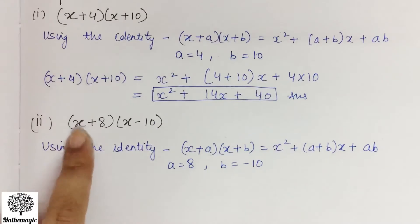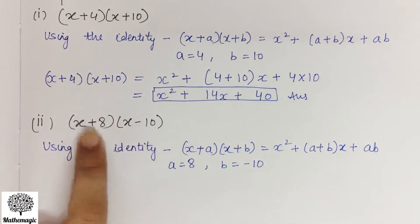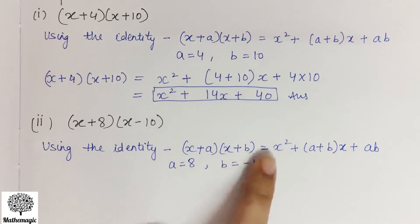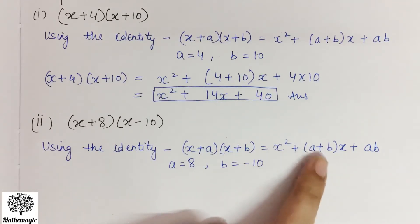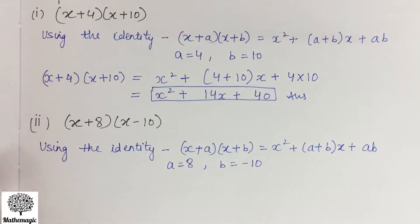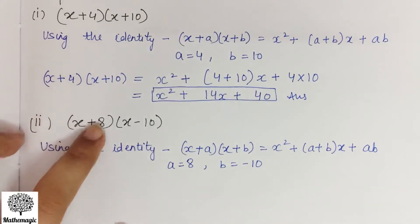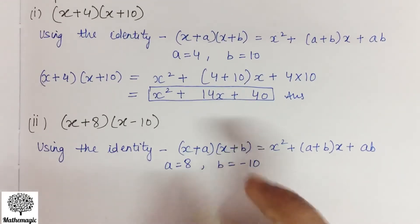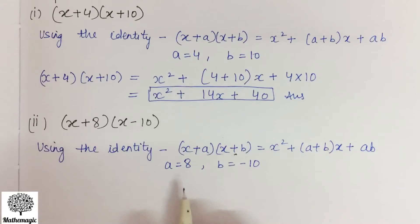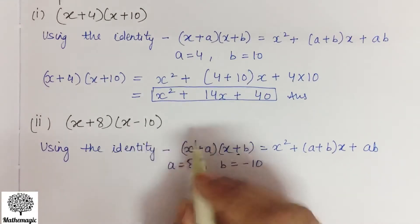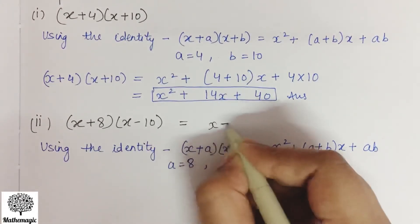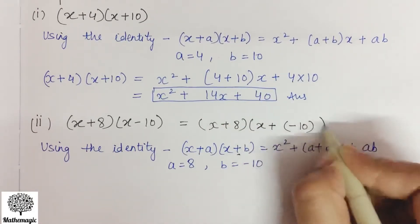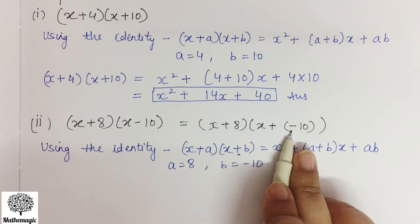Second part: (x+8)(x-10). We will again use the same identity (x+a)(x+b) = x² + (a+b)x + ab. The difference is that here a is 8 and b is -10. This can also be written as (x+8)(x+(-10)), because plus and minus gives minus. So a = 8 and b = -10.